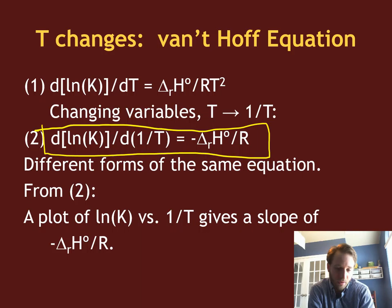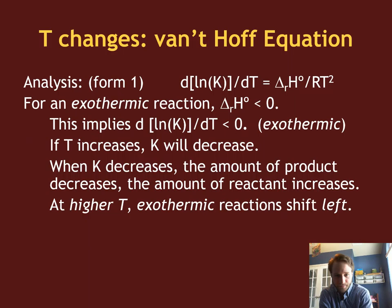So these are the exact same equations, but the nice thing about the second form is it directly shows that if I do a plot of the natural log of K versus 1 over temperature, the slope of that plot will equal delta H of the reaction divided by R, which is a very convenient way of trying to get the enthalpy change for a chemical reaction by plotting the natural log of the equilibrium constant at whatever temperature.